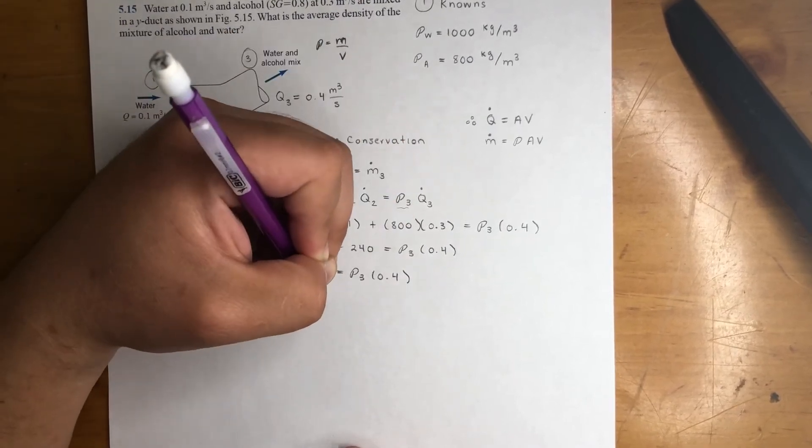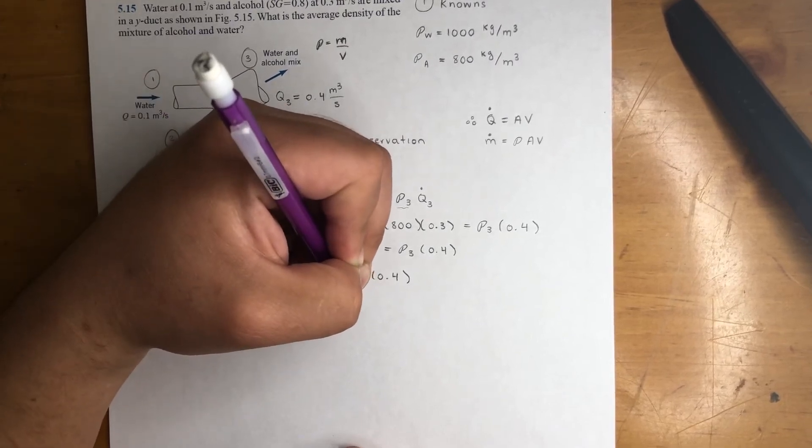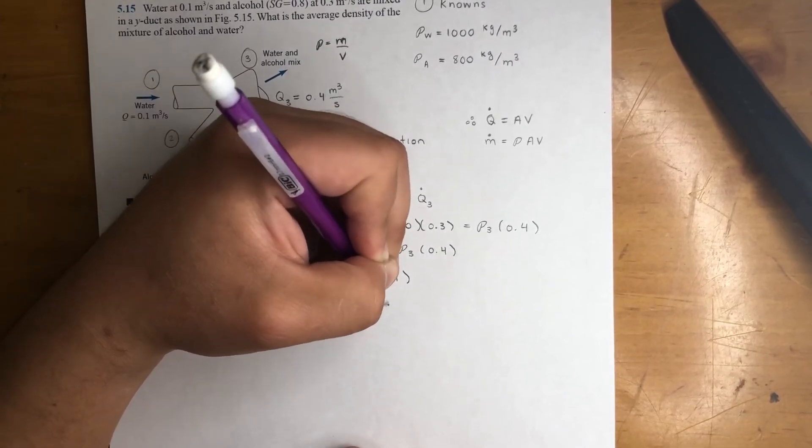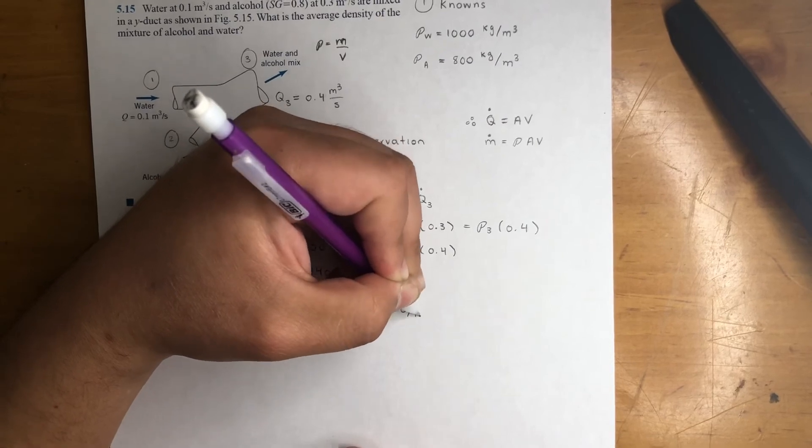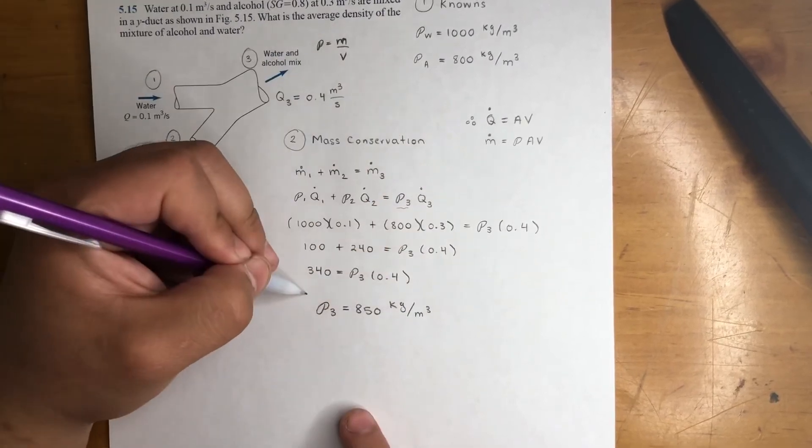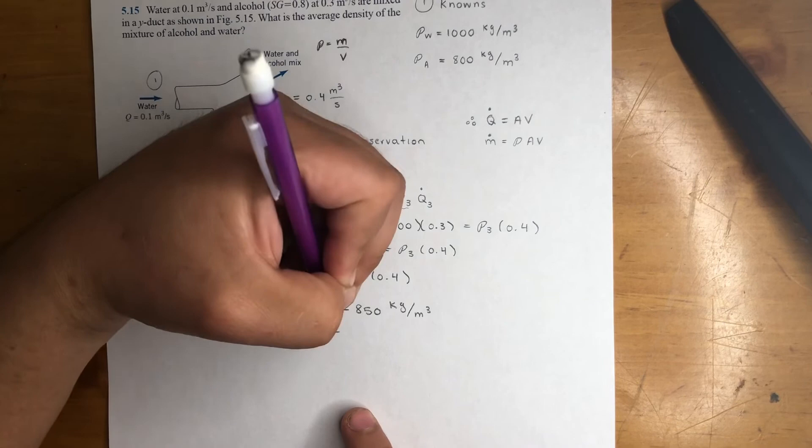Finally, you get rho 3 is equal to 850 kilograms per meter cubed. So this one's pretty straightforward. Nothing too crazy.